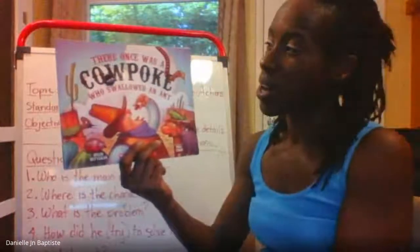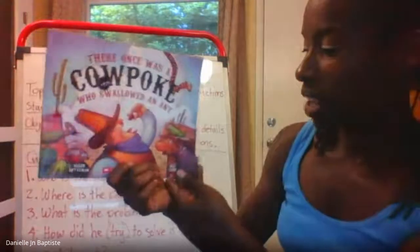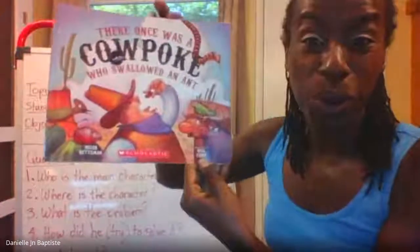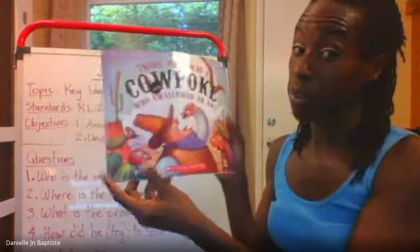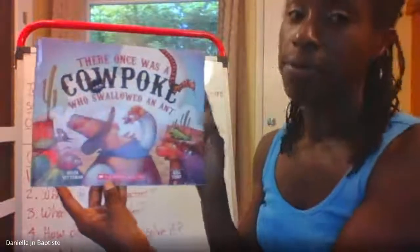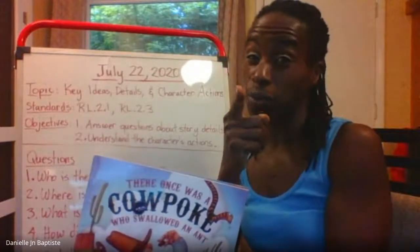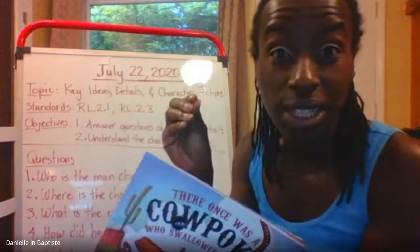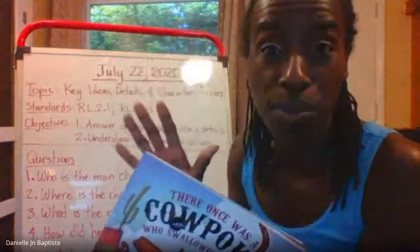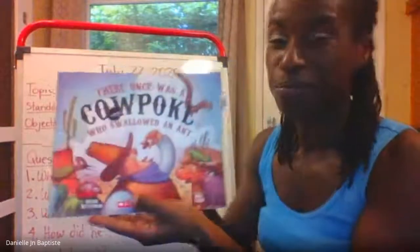So this is called 'There Once Was a Cowpoke Who Swallowed an Ant,' and this is written by Helen Kediman and illustrated by — so the pictures are drawn by — Will Terry. This is going to be a very interesting book, and it's brought to you by, of course, Miss JB and Scholastic. So this upcoming school year, when your teacher gives you one of those brochures — that thin newspaper-like bulletin for Scholastic with all sorts of neat books — you might want to consider telling your parents about it so that you can get a cool book like this.